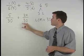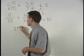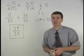Five over thirty plus twenty-four over thirty is twenty-nine over thirty, which is our final answer.